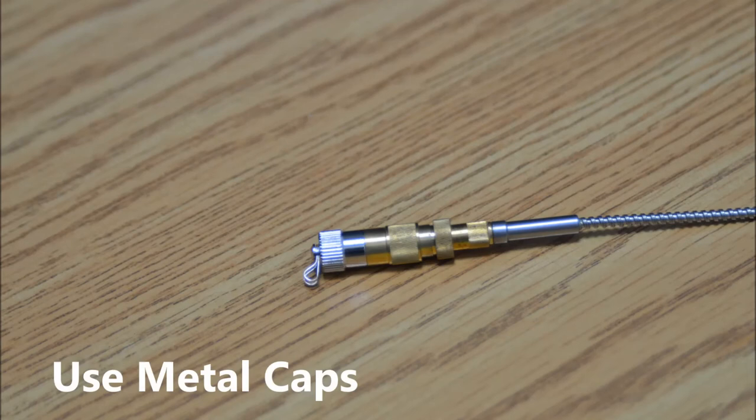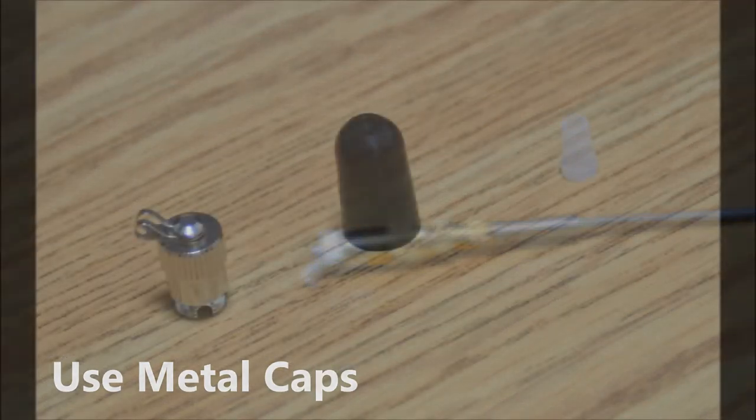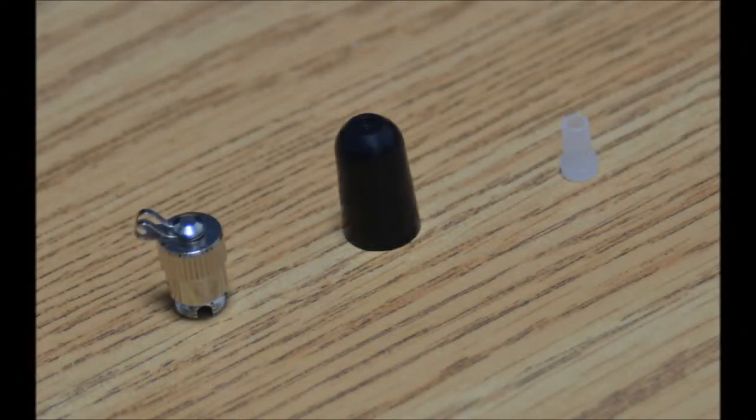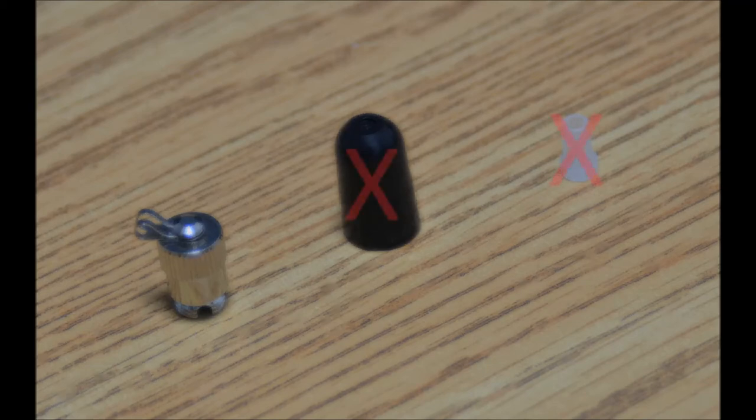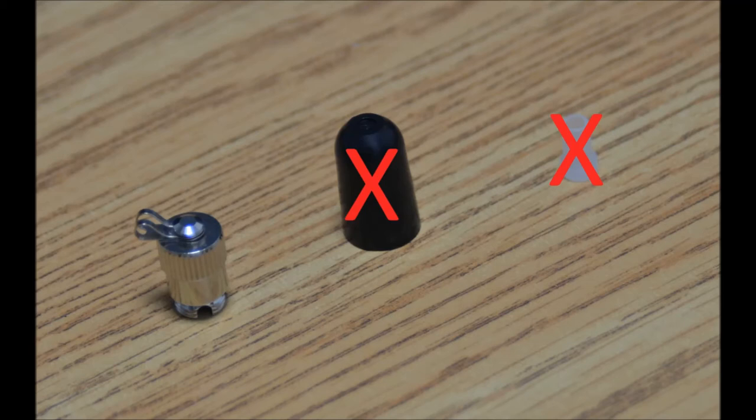Cleanliness of the fiber end face is very important for high power applications. To keep the fiber end face clean and to reduce risk of contamination when stored, metal caps must be used at all times instead of plastic or rubber caps. Plastic and rubber caps will out gas over time and can contaminate the fiber end face.